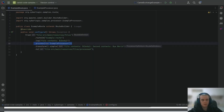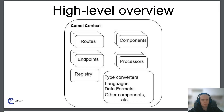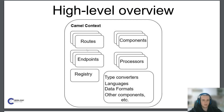To sum things up, we've explored the most important components of Camel architecture: CamelContext, which orchestrates everything; Camel routes, which define how data flows from one system to another; messages and exchanges, which represent data records and their containers; components and endpoints, which connect Camel to external systems; and processors, which modify messages and handle business logic. In the next video we will use these elements to get hands-on experience with Camel and build our first Camel route.